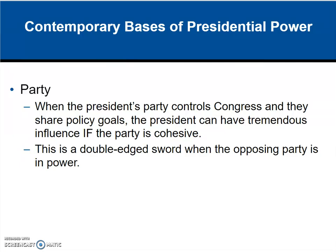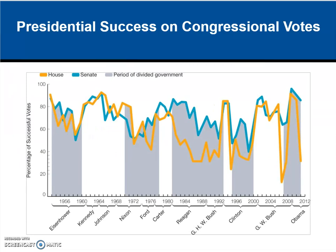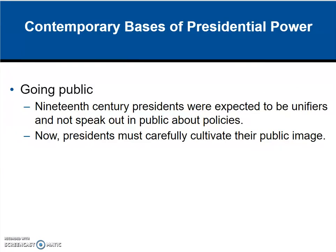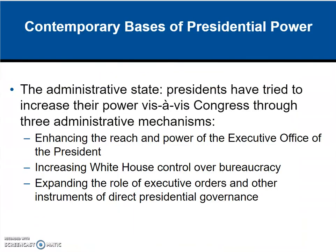Looking at the chart, the gray areas represent divided government, and you can see it is harder to get things passed. Another base of presidential power is the ability to go public — we've talked about this before. The advent of television, radio, and the internet have all helped the president spread his message and get the word out on policy.